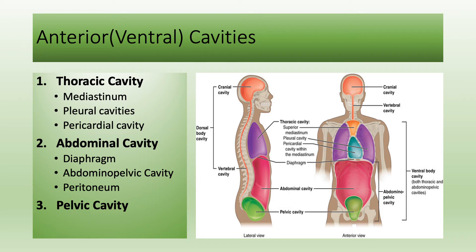The most inferior anterior cavity is the pelvic cavity, found right below the abdominal cavity. Because there is no physical barrier between the abdominal and pelvic cavity, we mostly use the terminology abdominal-pelvic cavity to describe them together. The pelvic cavity contains reproductive organs and the urinary bladder.